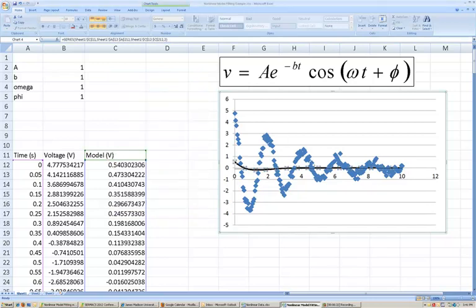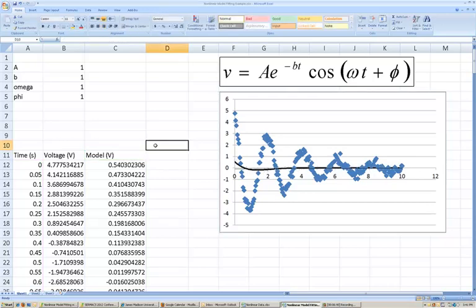Okay, so, in general, when you're plotting data, you want to plot it as data points using markers. When you're plotting a model, you want to plot it as a solid line. Now, clearly, the model that we have based on these parameters does not fit the data very well.